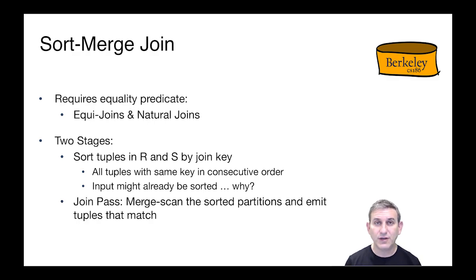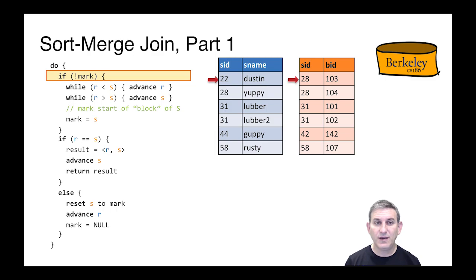The second phase then is a join pass in which we scan the two relations to be merged, which are already sorted on disk, and we merge them together, emitting tuples that match. So let's see how this works through some pseudocode. We have these two relations, we'll call them R and S. They're on the upper right. R is in blue, S is in orange. And let's walk through pseudocode of an iterator to do the sort merge join.